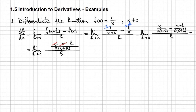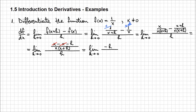x minus x is 0, so we are left with the limit when h approaches 0 of: I'll write the numerator as a main fraction — minus h over x(x+h) — and the h in the denominator becomes multiplying by 1 over h. Now we can cancel the h in the numerator with the one in the denominator, and the limit becomes the limit when h approaches 0 of minus 1 over x(x+h).